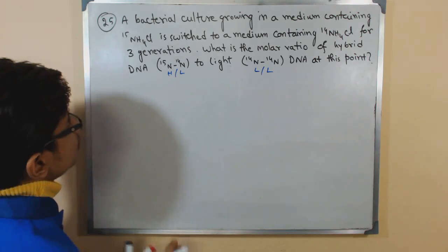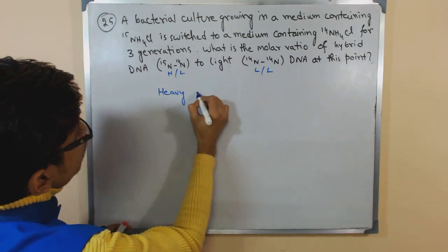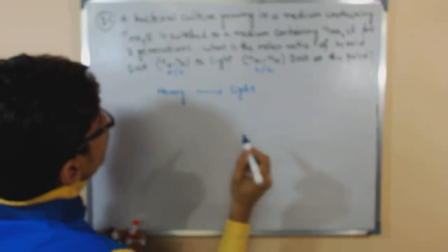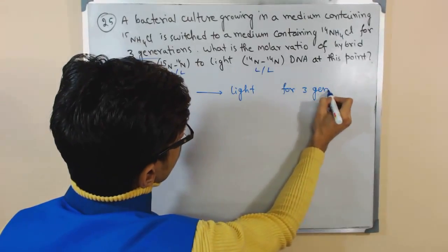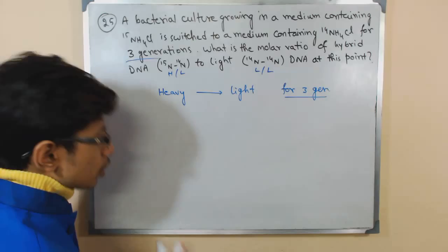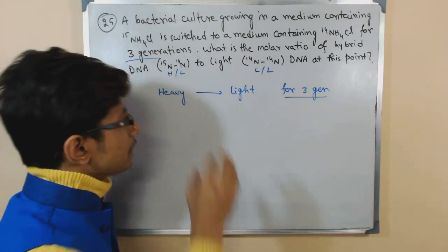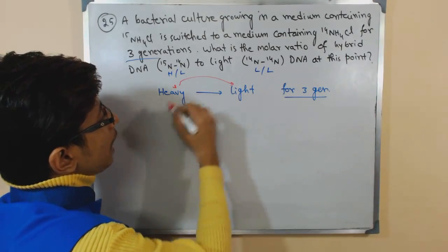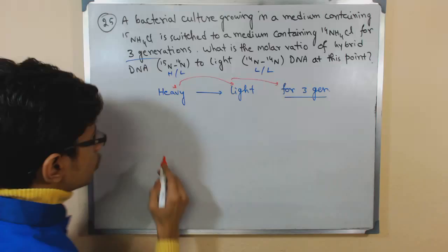So let me write the question in this form: we are transferring from heavy to light and we stay there for how many generations? Three generations. So for these three generations this shifting has been going on. That means we just take this bacteria from the heavy medium, put it into the light and stay for three generations to see what happens. So let's begin with it.